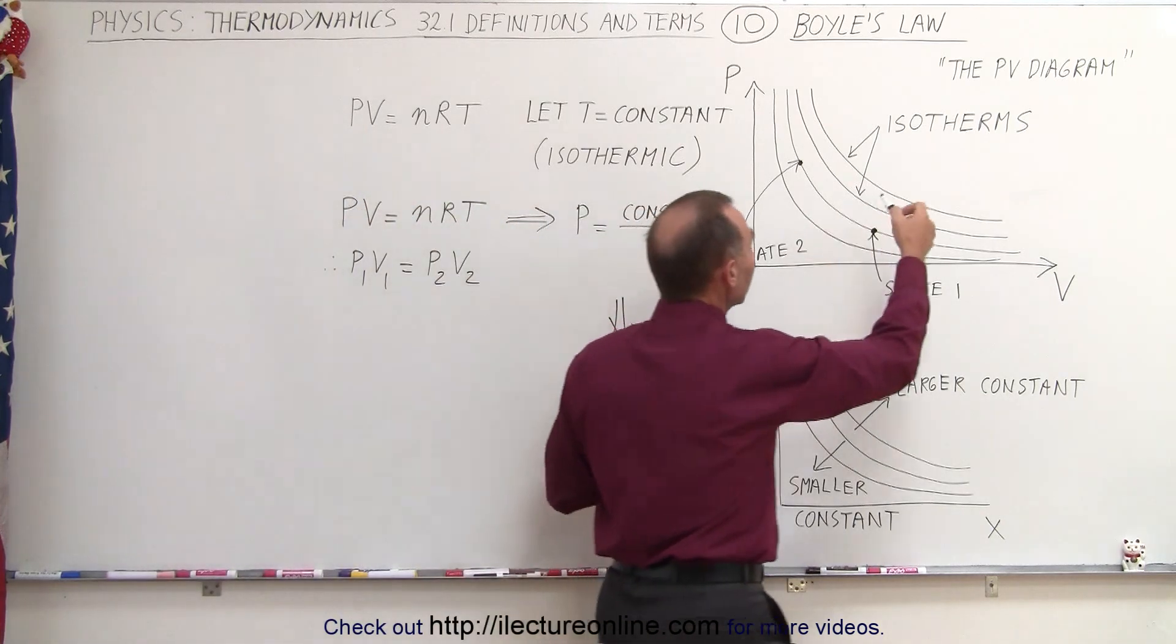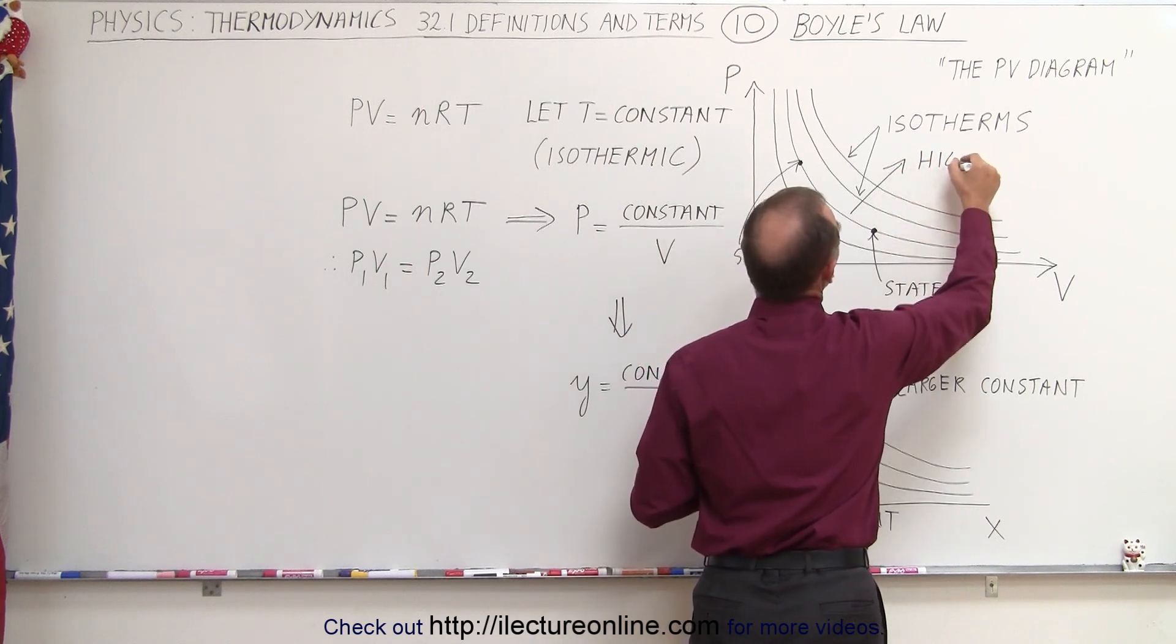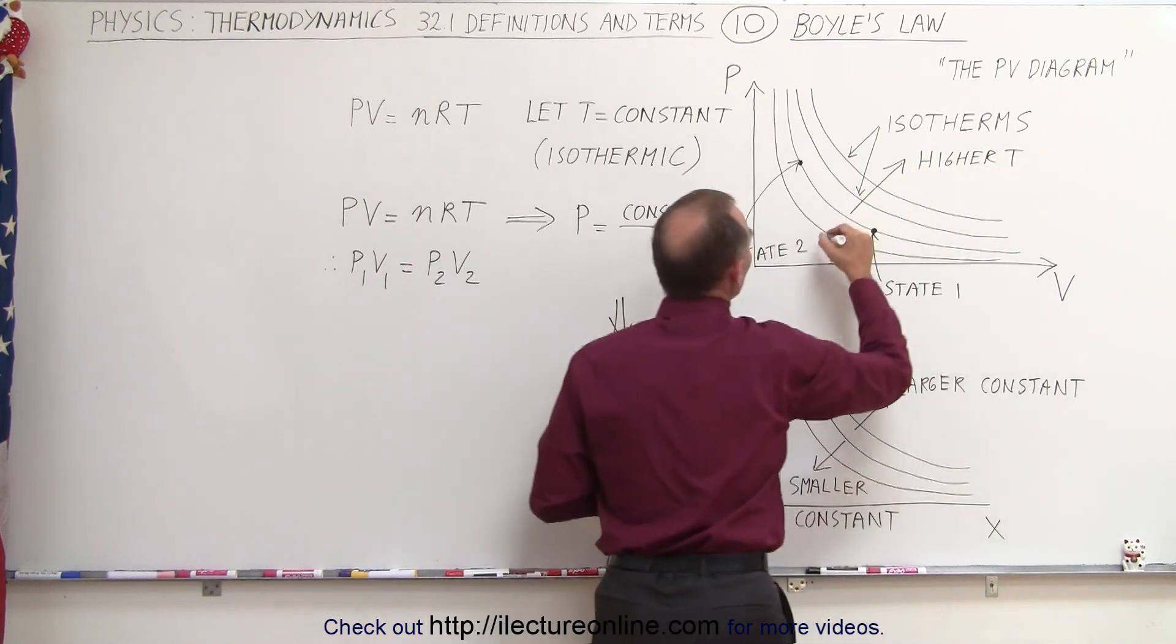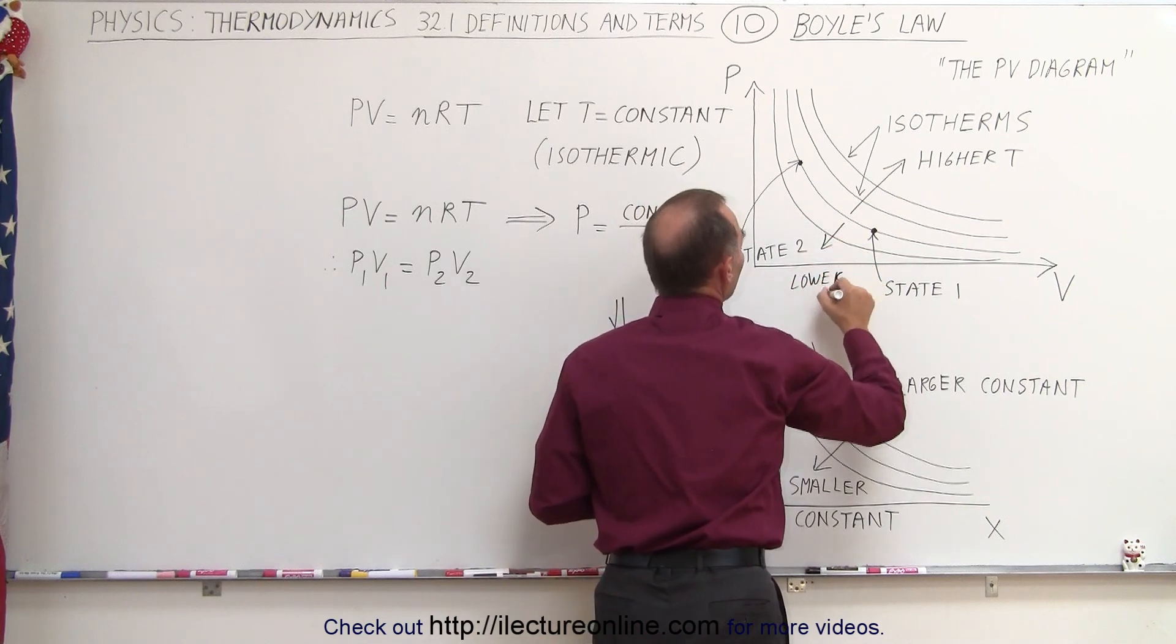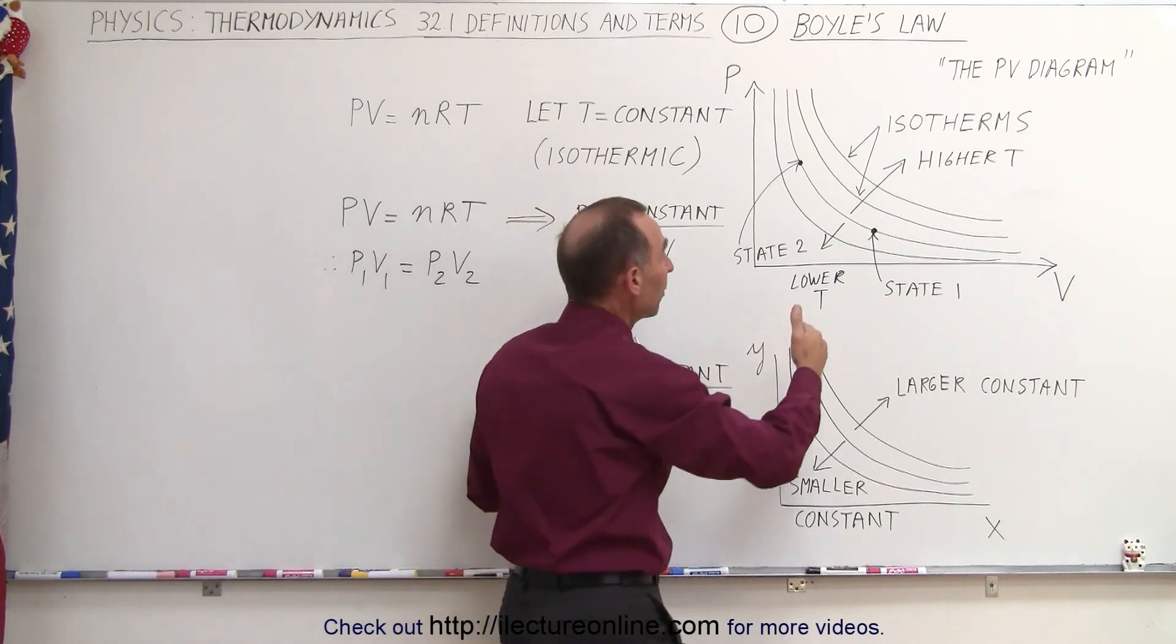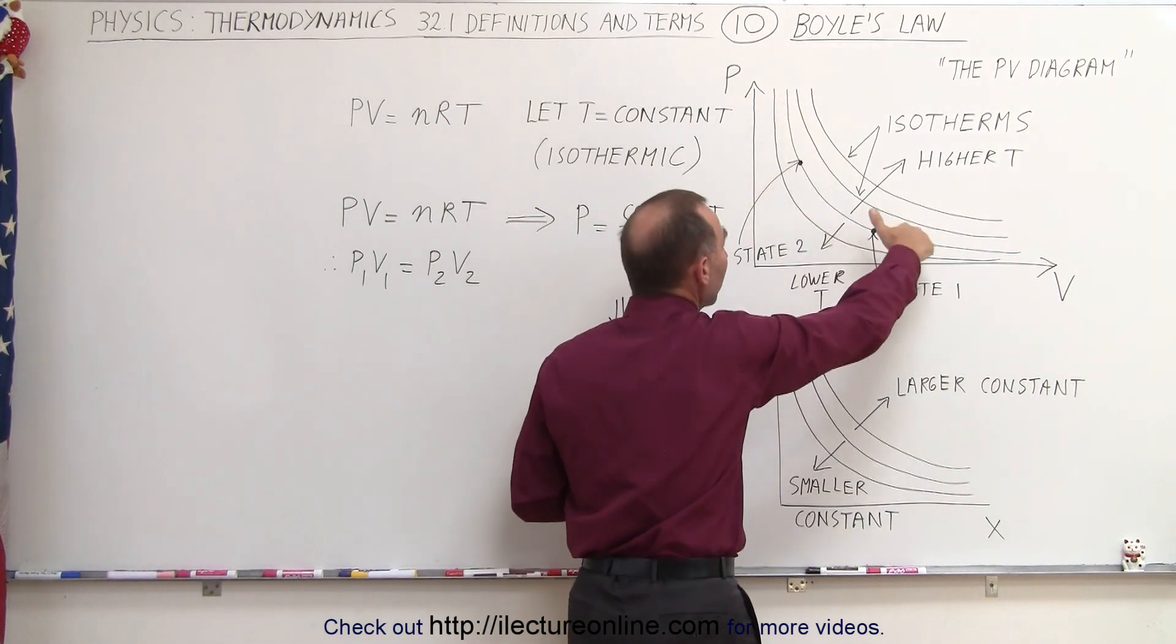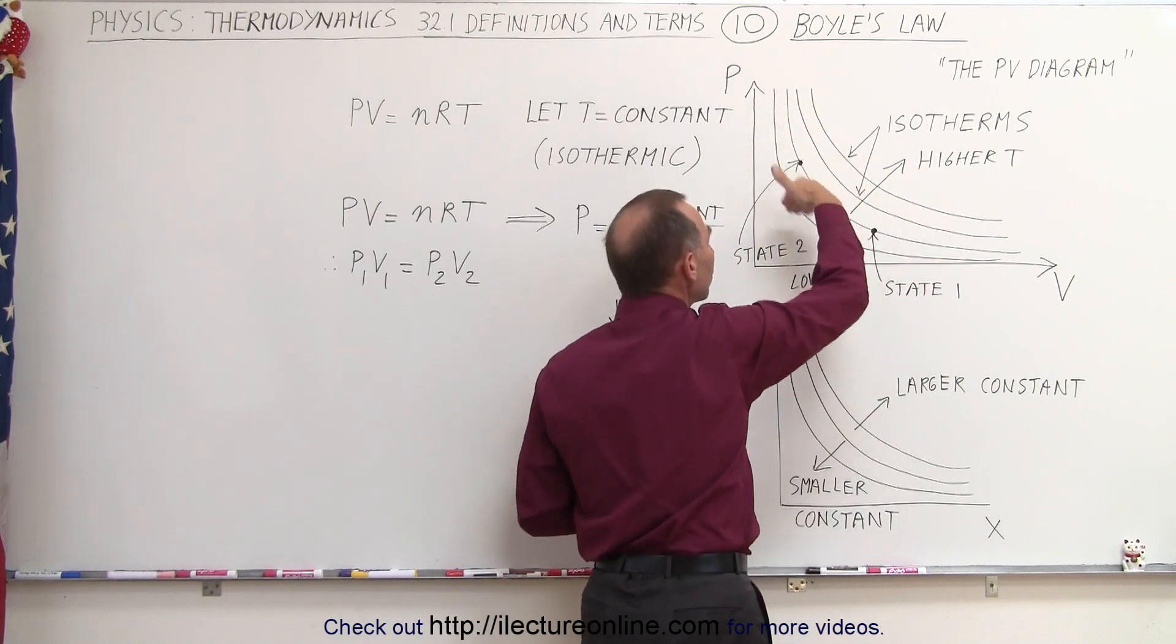Which means that on a diagram like this, the isotherms in this direction means higher temperature, and the lines in this direction represent lower temperature. So now we can see here that these isotherms simply represent constant temperatures, but the higher up you go, the higher the temperature. The lower you go, the lower the temperature.